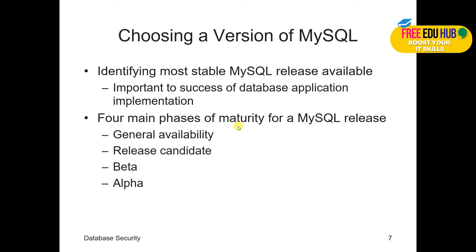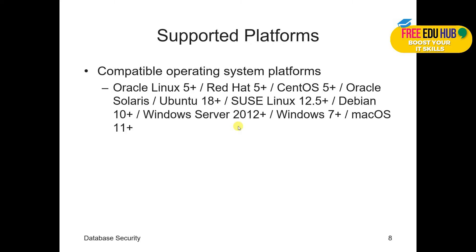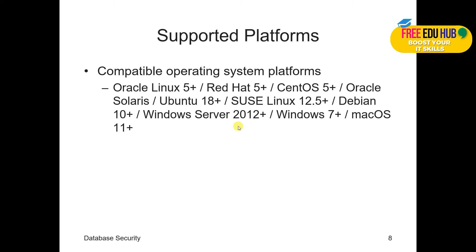Identifying the most stable MySQL release available is important to the success of database application implementation. Main phases of MySQL release were general availability, release candidate, beta, and alpha — but that was long ago. Nowadays, they have only one stable version available on their website. Compatibility depends on the operating system: Oracle Linux 5 and above, Red Hat 5 and above, CentOS 5 plus, Oracle Solaris, Ubuntu, SUSE Linux, Debian, Windows Server operating systems, Windows 7 onwards, and Mac operating systems — almost all operating systems. We'll be installing Server 2022 in our lab as a virtual machine on which we'll try to install MySQL. But that does not mean you cannot install it on Windows 7, 8, 10, or 11.